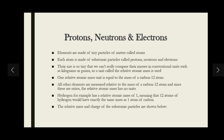Each atom is made up of subatomic particles called protons, neutrons, and electrons. These subatomic particles are so tiny that we can't compare their masses in conventional units such as grams or kilograms. So a special unit called the relative atomic mass is used. One relative atomic mass unit is equal to the mass of a carbon-12 atom, and all other elements are measured relative to it.